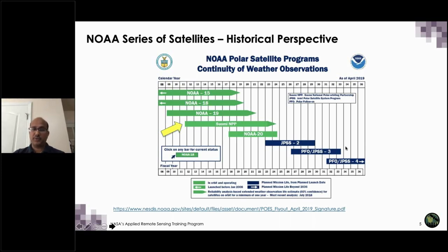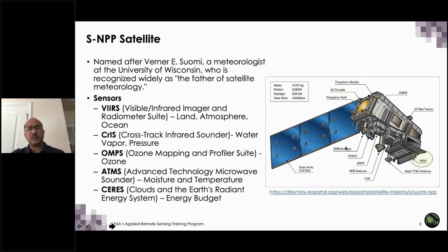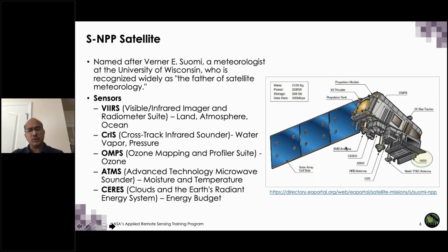The first VIIRS was launched on the SUOMI NPP satellite. SUOMI was a well-known meteorologist considered the father of satellite meteorology — a professor at the University of Wisconsin. The satellite has five different sensors; VIIRS is just one of them. VIIRS stands for Visible Infrared Imager and Radiometer Suite. It has been designed very much like MODIS to do applications on land, atmosphere, and ocean. Other sensors include CERES, ATMS, and CrIS, each with different application objectives.